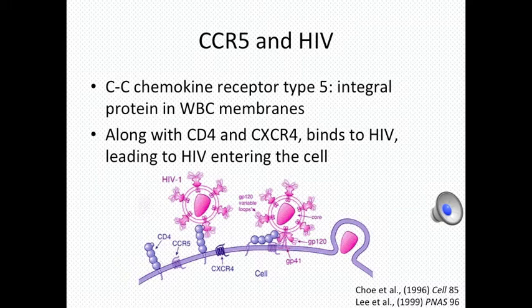It is now known that CCR5 contributes to the transmembrane thoroughfare by which HIV ingresses into the cell, along with the proteins CD4 and CXCR4.